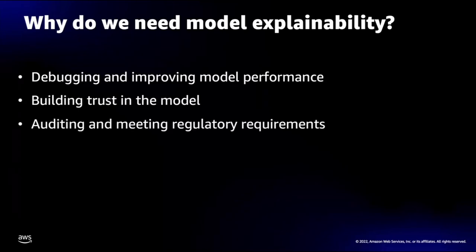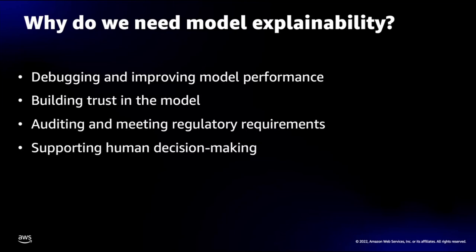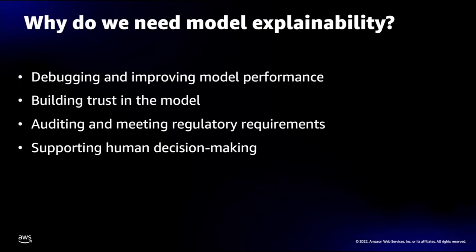We also need to meet regulatory requirements for the model and audit past decisions. And finally, we need to support human decision making. For example, if the machine learning model is showing a customer service agent a prediction of why a particular customer is calling, it helps for the model to display an explanation so that the agent can choose to accept the prediction or ignore possibly erroneous automated assistance.